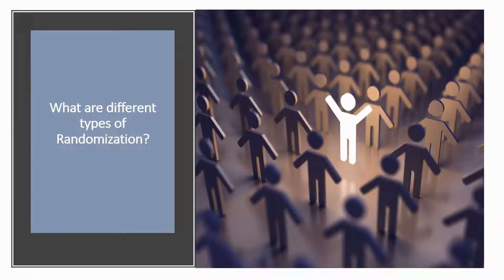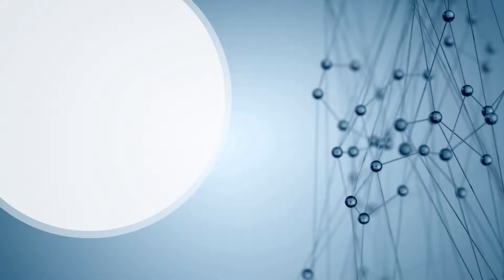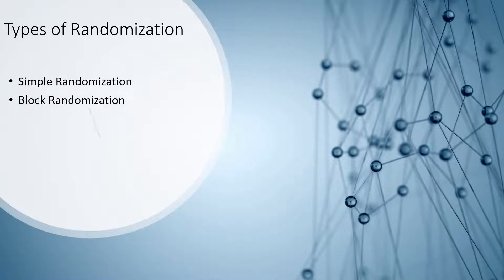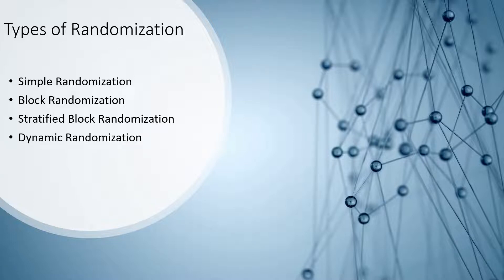What are the different types of randomization? There are different forms of randomization. Some of the most common methods are simple randomization, block randomization, stratified block randomization, and dynamic randomization.